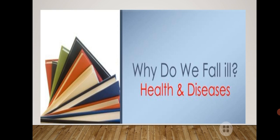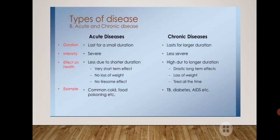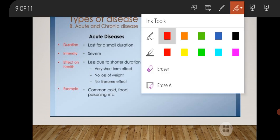Today we are going to learn about the types of diseases and causes of diseases — how many types of diseases are there and what causes them. According to the number of days a particular disease remains in a person's body, diseases are of two types: acute diseases and chronic diseases.